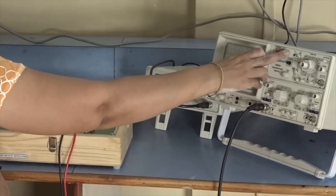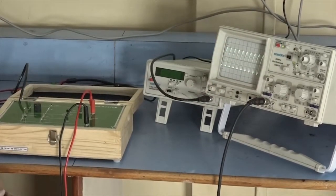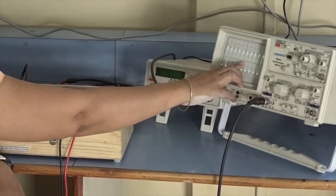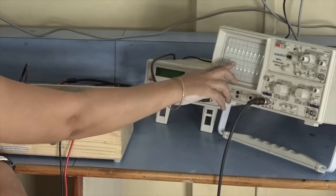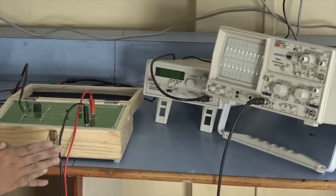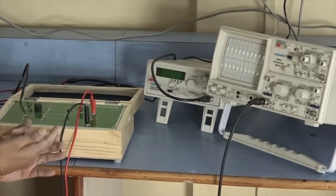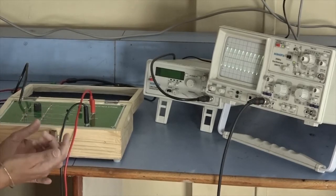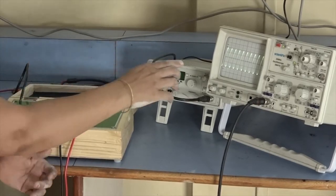Next part is to calculate the frequency. To calculate the frequency again you have to adjust the X position of your waveform. Frequency is nothing but the number of cycles per second. First you have to calculate the time per division, and after that you have to calculate the frequency by taking the reciprocal of time per division.